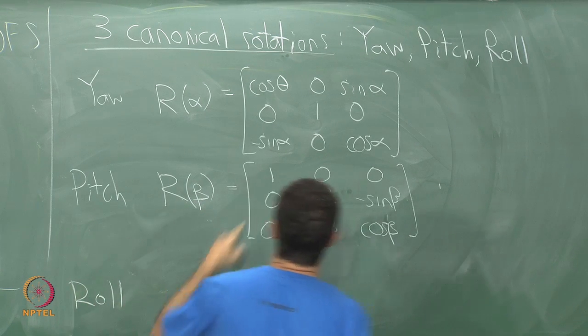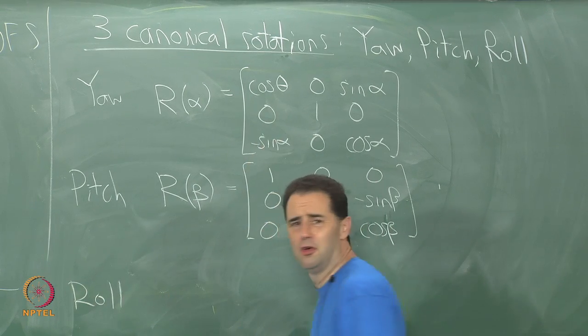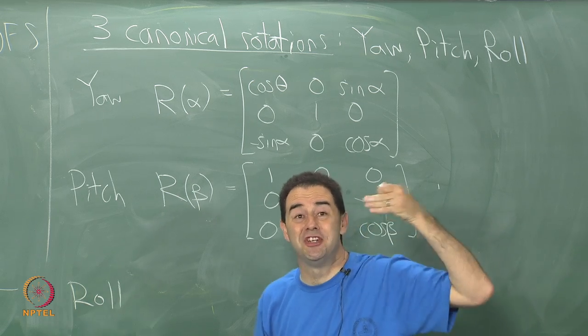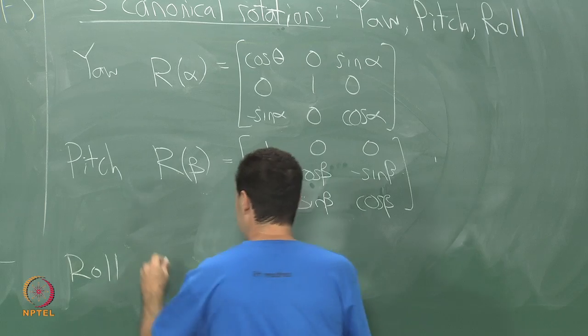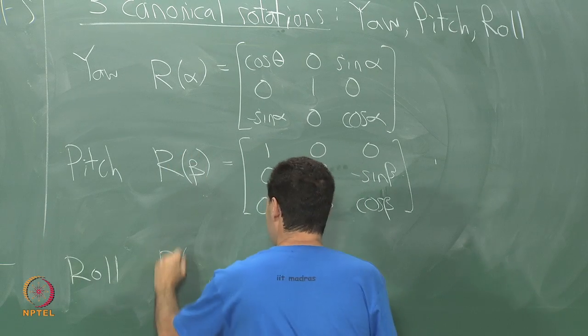We already guessed that the x part is going to look like an identity matrix, and then here in this remaining part, this remaining block, we just make the 2 by 2 rotation matrix but with a beta in it: cosine beta, minus sine beta, sine beta, cosine beta.